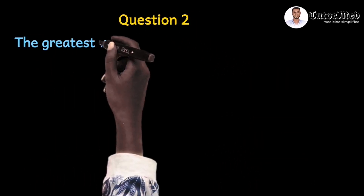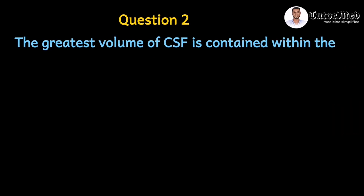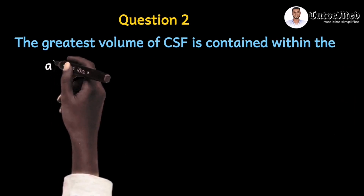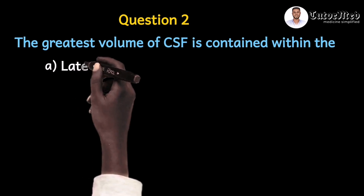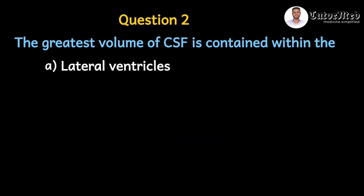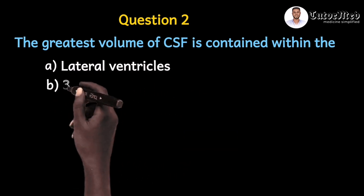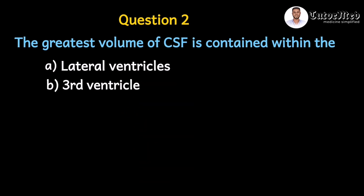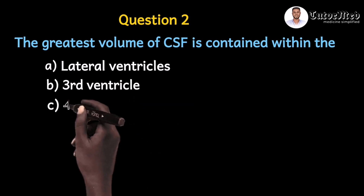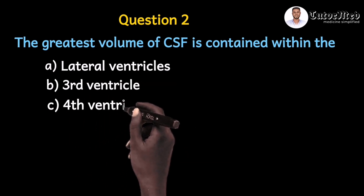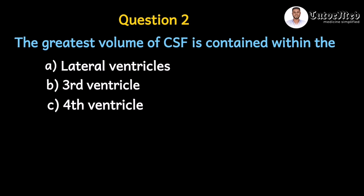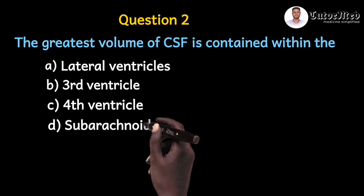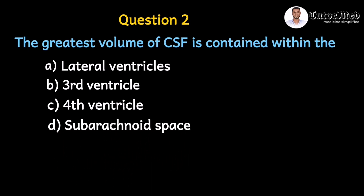Question two says: the greatest volume of CSF is contained within — A: lateral ventricles, B: the third ventricle, C: the fourth ventricle, or D: the subarachnoid space. Which of these options contains the greatest volume of CSF produced?